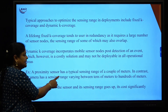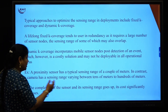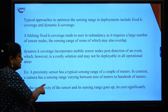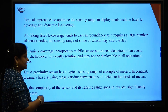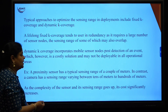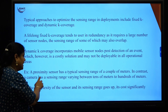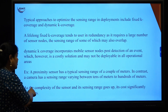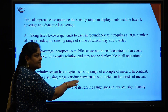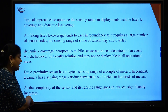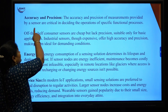For example, a proximity sensor has a sensing range of just a couple of meters, whereas a camera sensor's sensing range may vary from 10 to 100 meters. Detection accuracy depends on the range of the particular sensor, which differs from sensor to sensor. As the complexity and sensing range of a sensor increases, the cost of that sensor also increases.